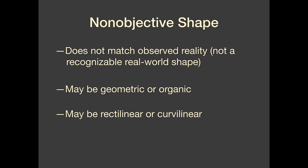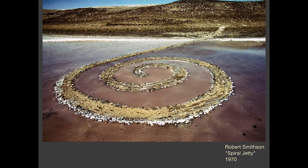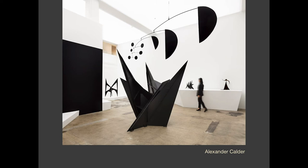Last but not least, we have non-objective shape. This is something that does not match observed reality — it's not something recognizable from the real world. Non-objective is what most people mean when they say abstract. In this class I'm not going to get on your case if you say abstract when you mean non-objective, but it's good as an art student to know the difference. This is a geometric non-objective shape — it's a spiral, but it doesn't match an object in the real world. And this Alexander Calder installation — all geometric shapes, but they don't match anything in the real world that would constitute a recognizable shape.